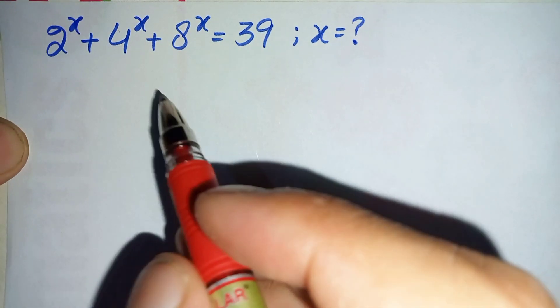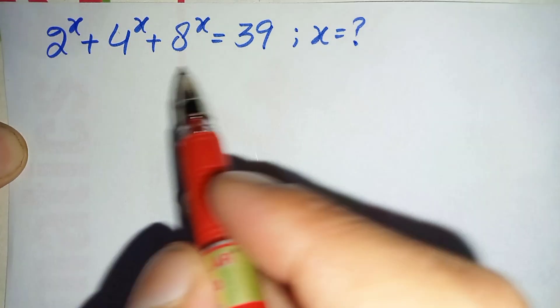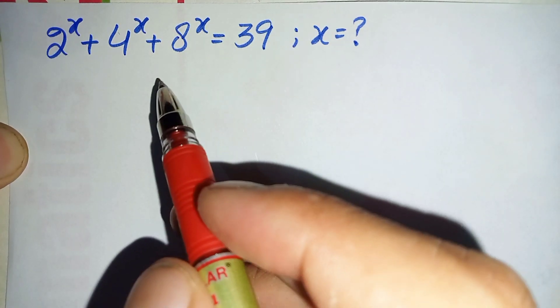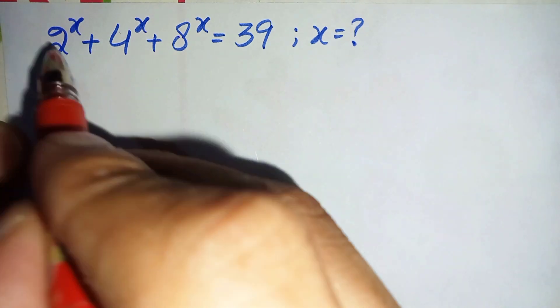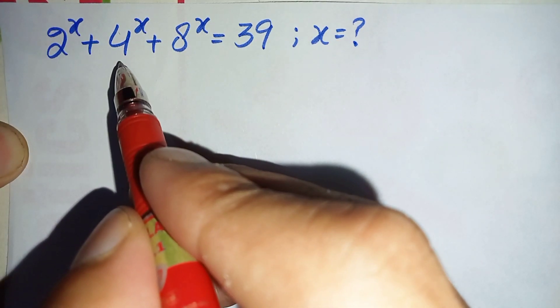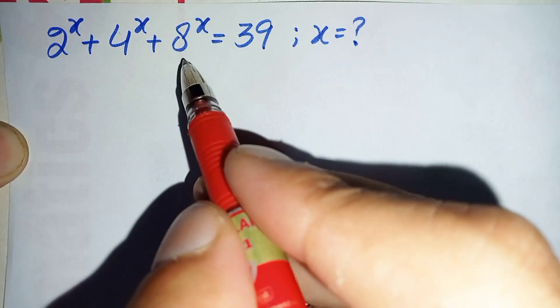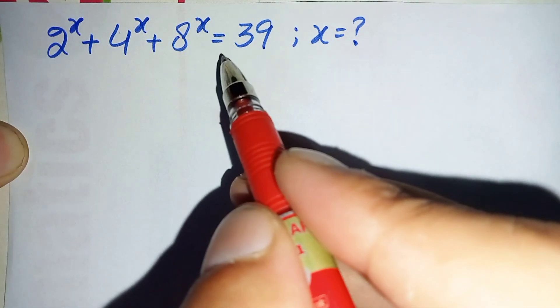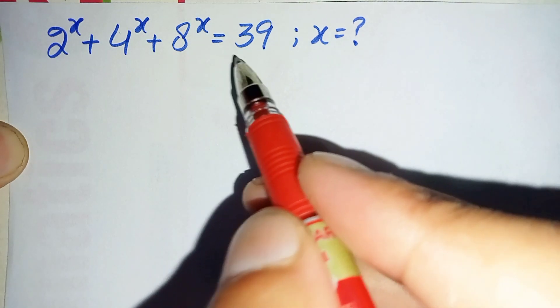Hi everyone, you are welcome. How to solve this nice exponential equation which is 2 raised to power x plus 4 raised to power x plus 8 raised to power x is equal to 39.